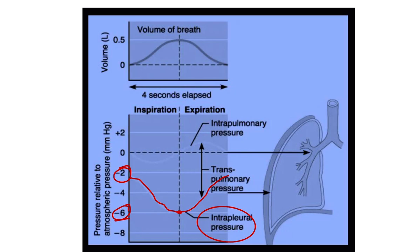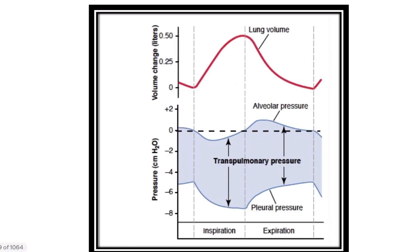That means the intrapleural pressure during inspiration, during expiration, and between inspiration and expiration is always negative. Normally, intrapleural pressure is negative at all times. Here we can also see the intra-alveolar pressure line, which changes during inspiration and expiration. The pleural pressure is always present at or below the zero level, always in the negative direction during both inspiration and expiration.